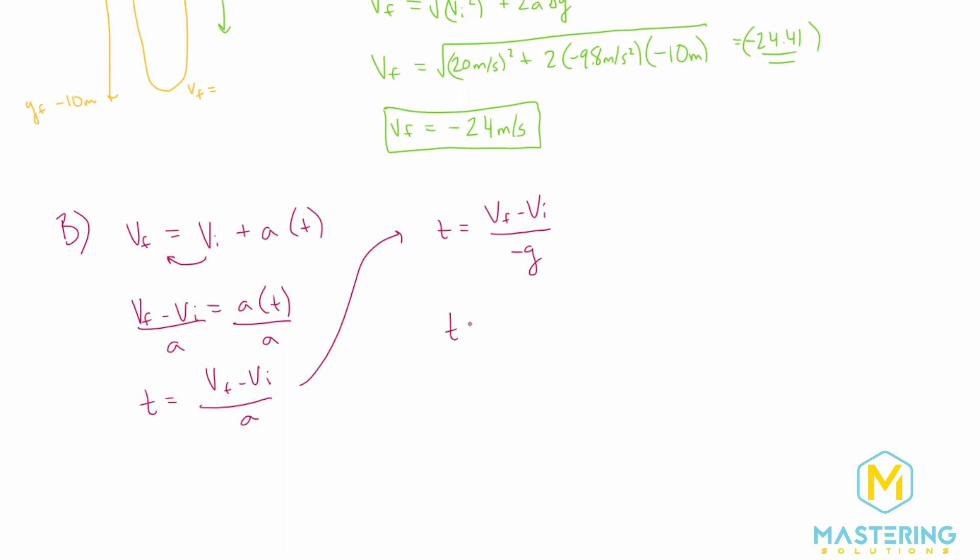So now when we plug in our numbers, we'll get v final, in this case we found, is a negative 24 meters per second. We'll subtract the initial velocity, which we said was 20 meters per second. And then we'll divide by a negative g or negative 9.8 meters per second squared.